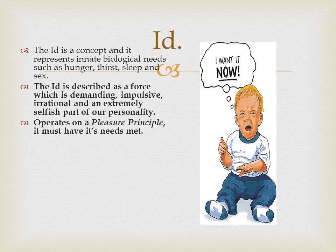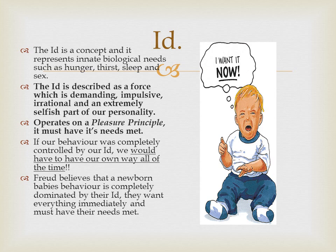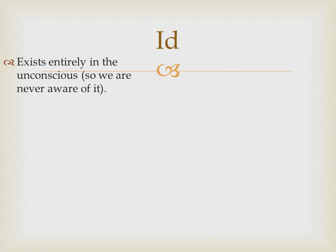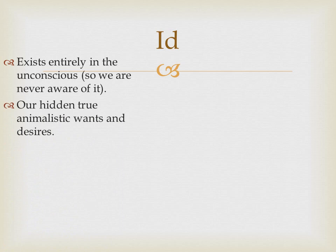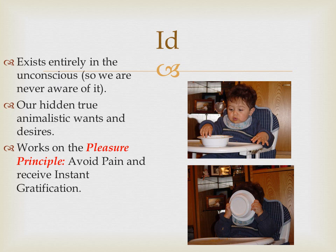The first part is the id — something we're born with. The id represents our innate biological needs: hunger, thirst, sleep, and our sexual drive. These are things we want from when we're infants — we want that pleasure met. It is described as a force that is demanding, impulsive, irrational, and extremely selfish. It operates on the pleasure principle: I want to be pleased. If our behavior was completely controlled by the id, we would have to have everything our own way all the time — like a newborn baby who cries until their needs are met. The id exists entirely in our unconscious awareness, completely underneath the iceberg.